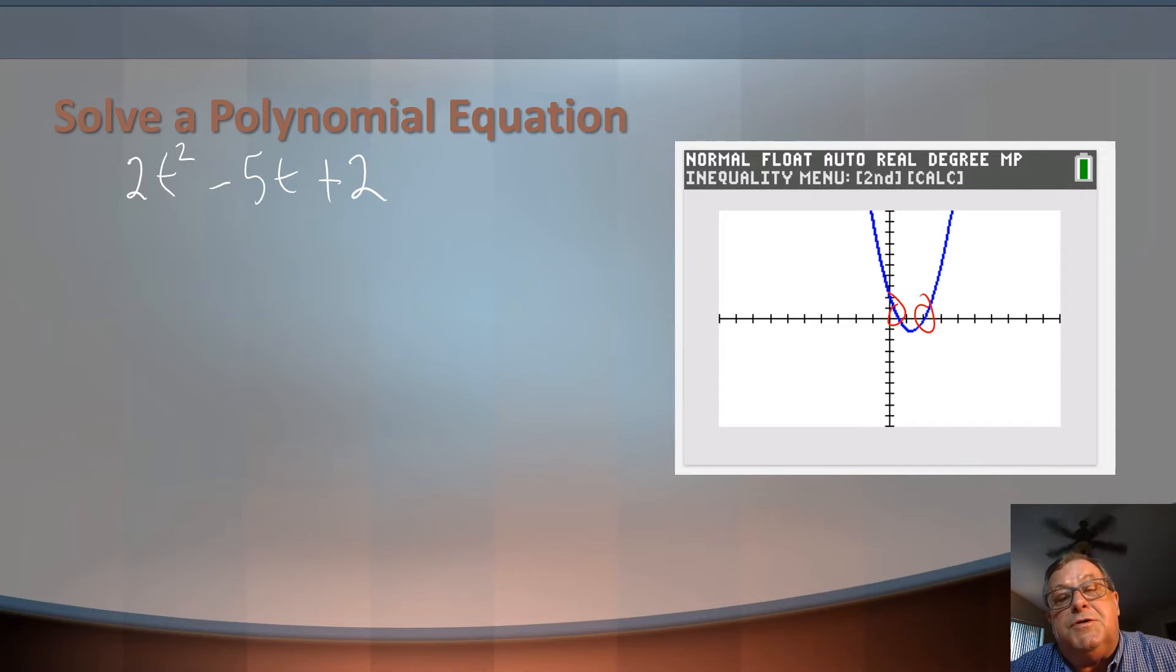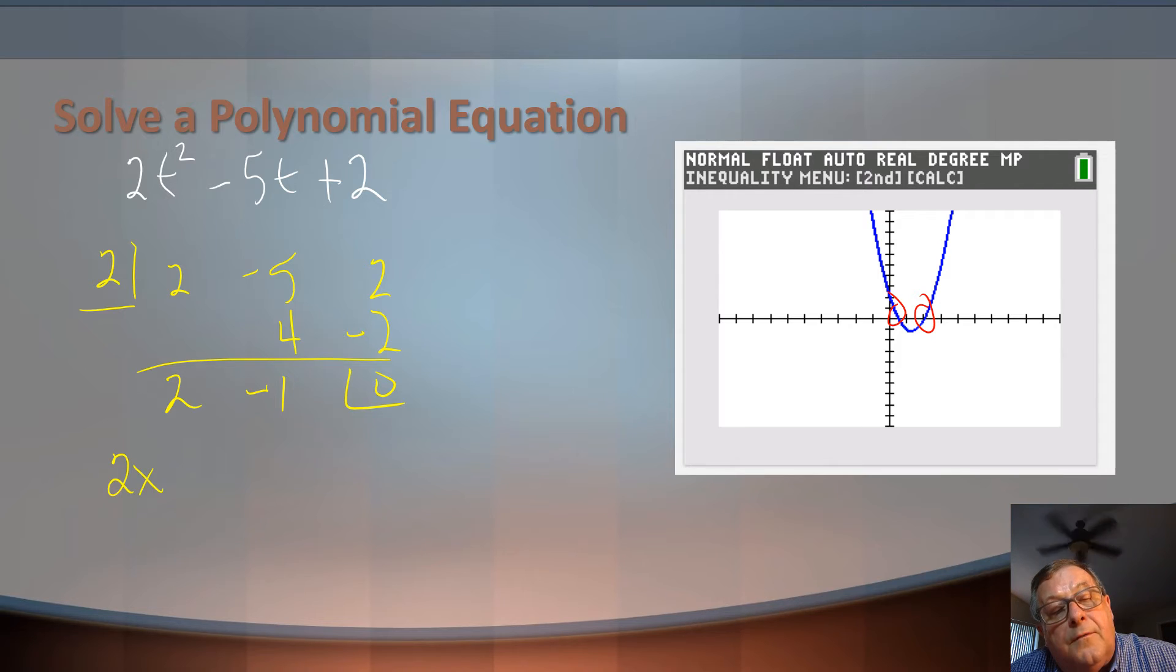I could either use synthetic division or actually just factor this 2t² - 5t + 2. Well, let's just use synthetic division. So let's go with the 2. We've got 2, -5, and 2. Bring down to 2. 2 times 2 is 4. -5 plus 4 is -1. 2 times -1 is -2. And shazam, we've got a 0 remainder.